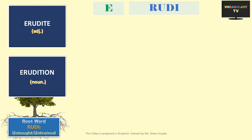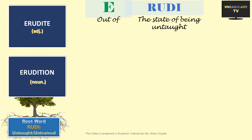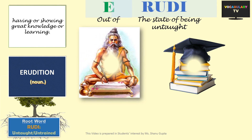Our last word is 'erudite'. The prefix 'e' means 'out of' and the root 'rudi' means untaught, so the word literally means 'out of the state of being untaught'. The exact opposite of untaught would be someone who is well taught and learned, which is what the word means. Used as an adjective, 'erudite' refers to someone having or showing great knowledge, learning, or scholarship.